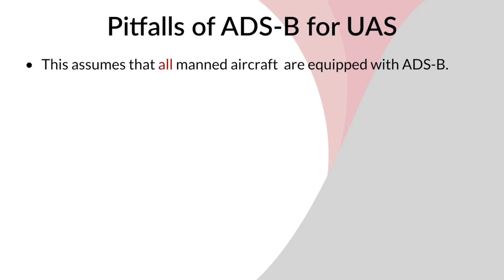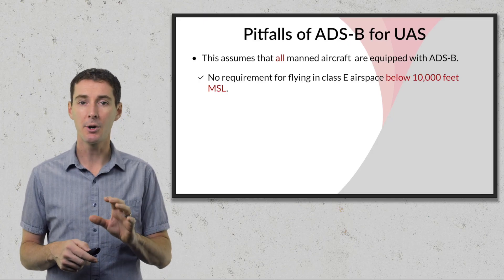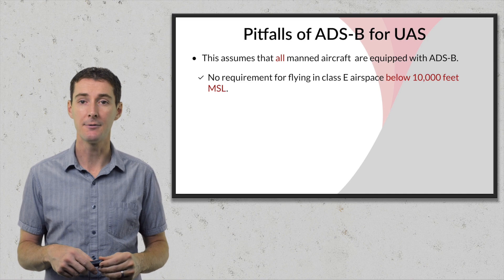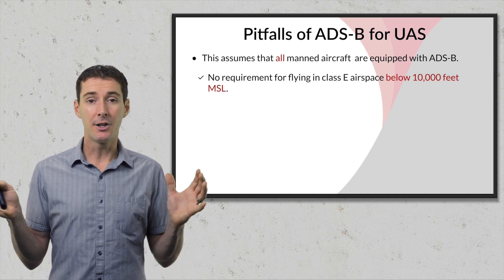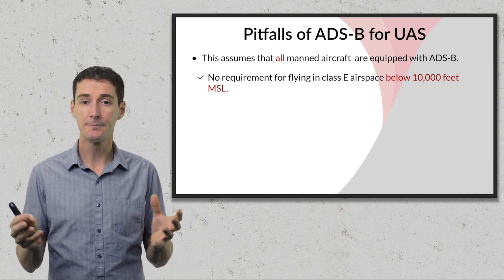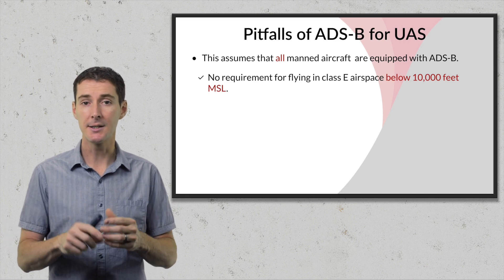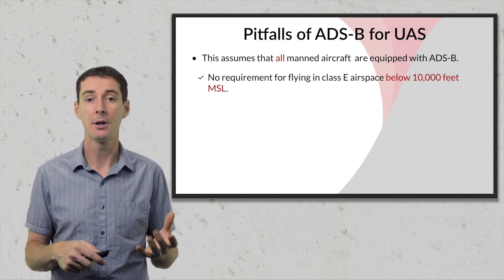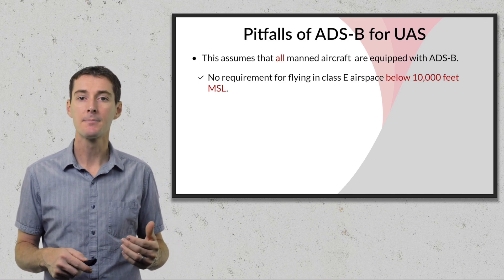I've thought about this for a while and here are some pitfalls for ADSB for UAS. First, this assumes all manned aircraft are equipped with ADSB, which is not the case. There's no requirement for ADSB in Class E airspace below 10,000 feet MSL, which covers a large part of the country. Class E is basically everything outside of airports, and Class G is also not included — both are areas where drone pilots will frequently fly.